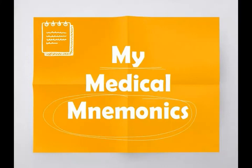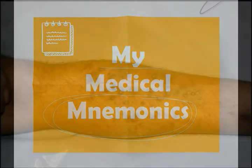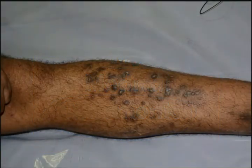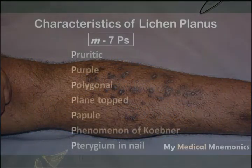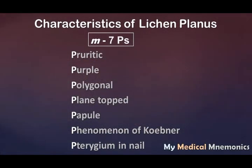Hello viewers, welcome to the channel My Medical Mnemonics. Today we are going to see a trick to remember the characteristics of lichen planus. Lichen planus is a skin disorder — it is a type of papulosquamous skin disorder. It is characterized by seven P's. The first P is pruritic, meaning it is a severely itchy lesion. The second P is purple — the lesions in lichen planus are hyperpigmented, mostly of purple color.